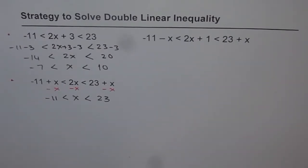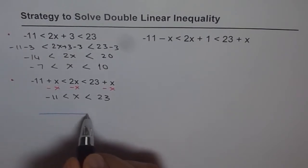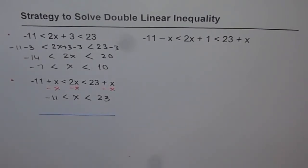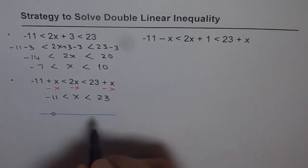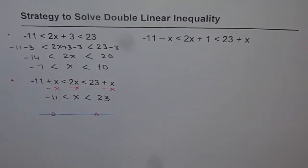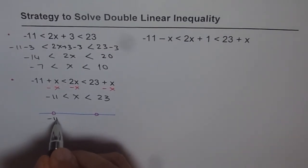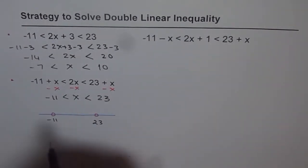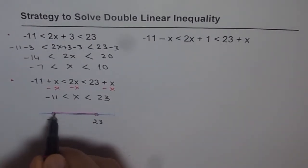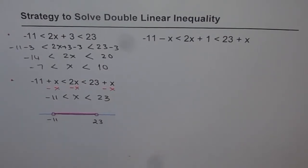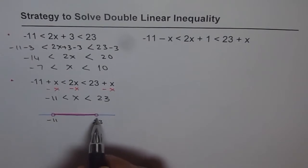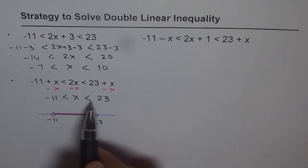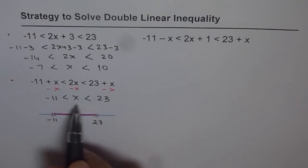At times we may have to show the inequality on a number line. In that case this solution can be represented as two holes — one at minus 11 and the other at 23 — with x in between the two. So x belongs to the set of real numbers between minus 11 and 23. These holes should not be filled in since the sign is greater than or less than, not equal to.